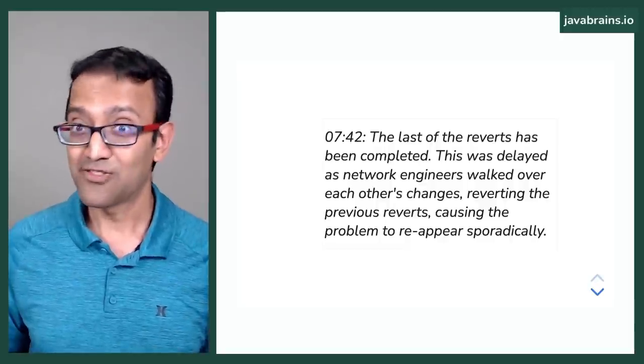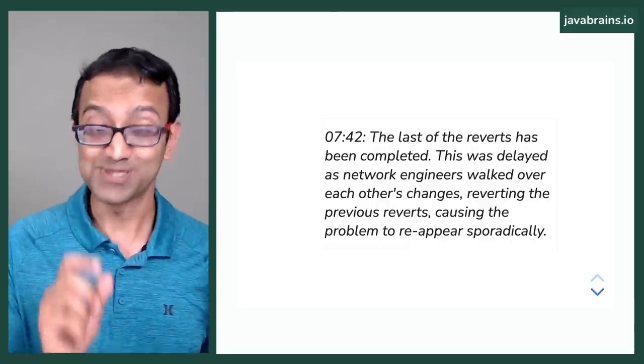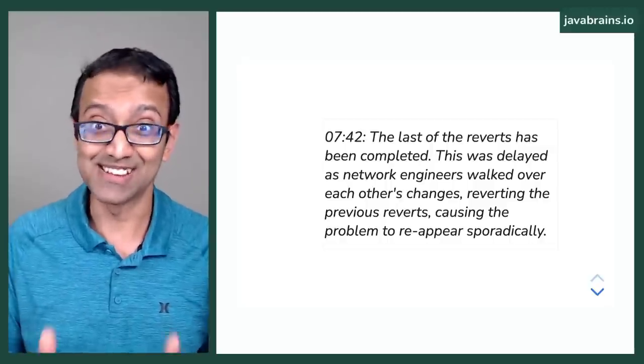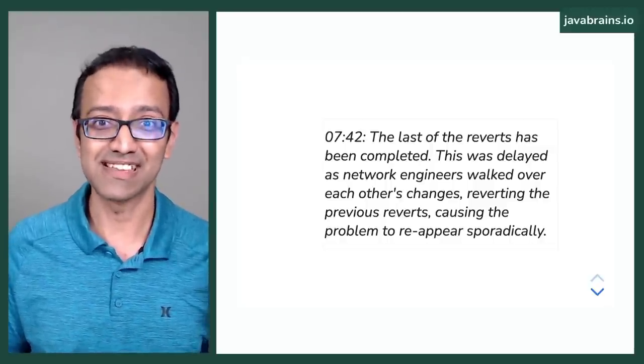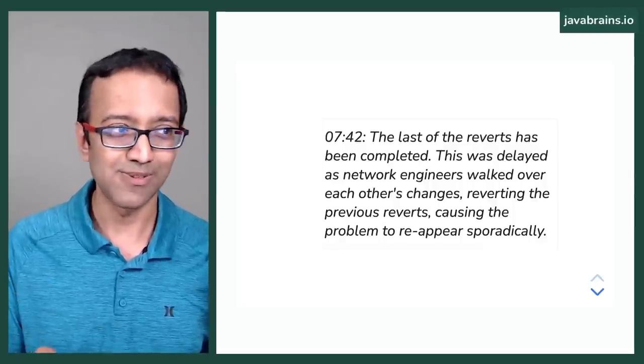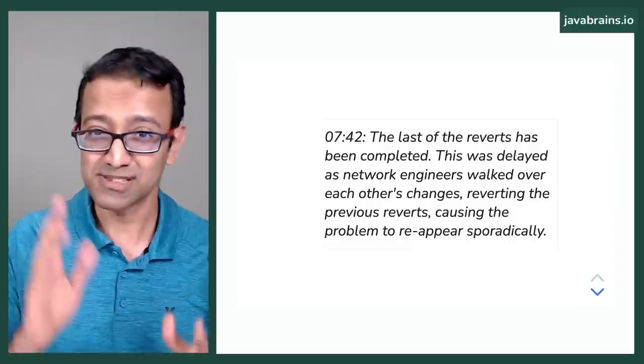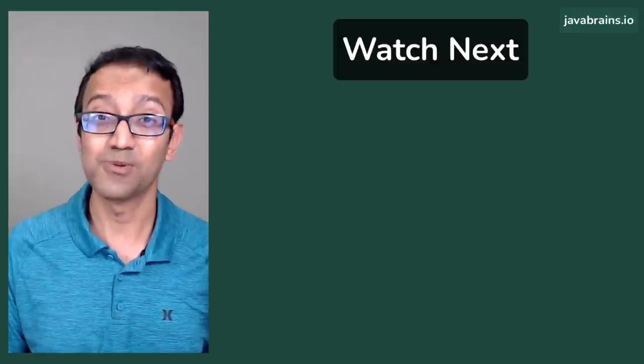So that's the Cloudflare outage and how one line of code change, literally the position of a line, brought down like half of the world's traffic or something crazy like that. So I hope you enjoyed this video. Like or comment to let the YouTube algorithm know, and here's another video that you'd probably like to watch next.